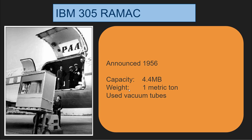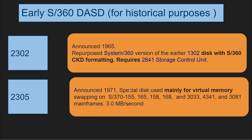Now let's get to the DASDs announced as part of the IBM S360 product family in 1965. IBM simply took the disk from the previous IBM 1301 mainframe — a small decimal arithmetic mainframe for business — called the 1302, and turned it into the 2302, with CKD formatting, requiring a 2841 storage controller to work with DOS/VS.